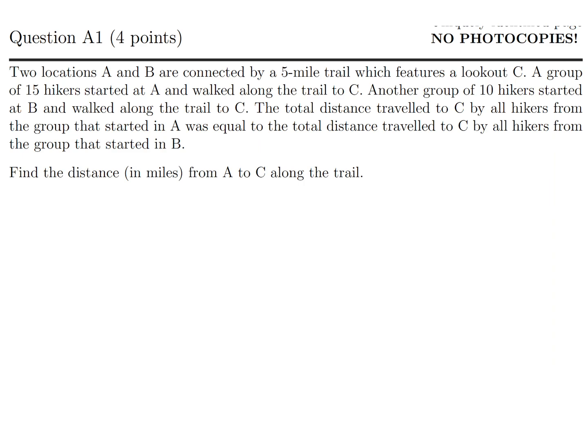Two locations A and B are connected by a 5 mile trail which features a lookout C. A group of 15 hikers started at A and walked along the trail to C. Another group of 10 hikers started at B and walked along to C. The total distance traveled to C by all hikers from the group that started in A was equal to the total distance traveled to C by all hikers in the group that started at B. Find the distance from A to C.